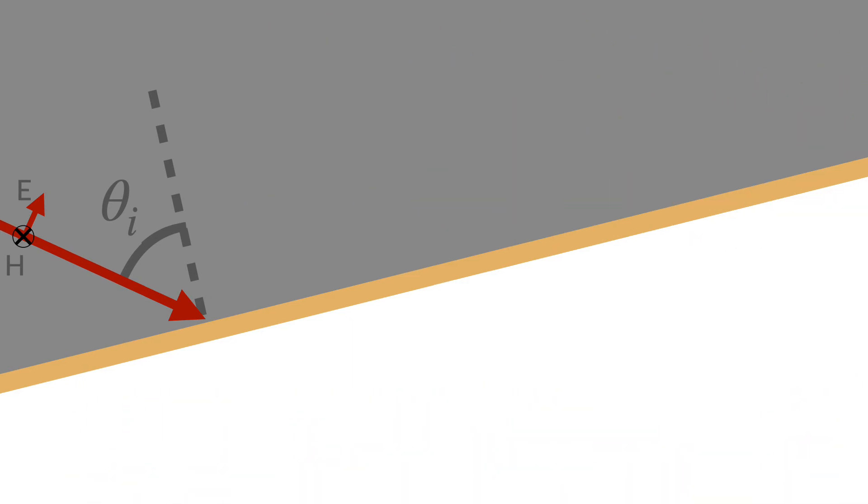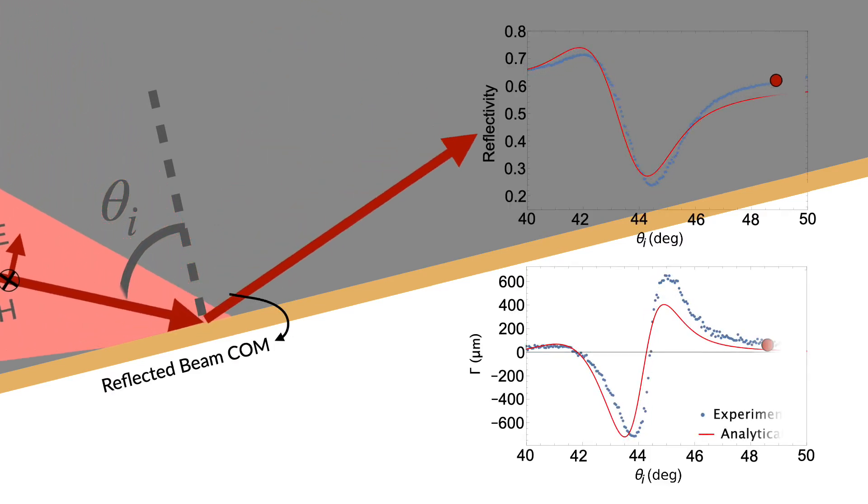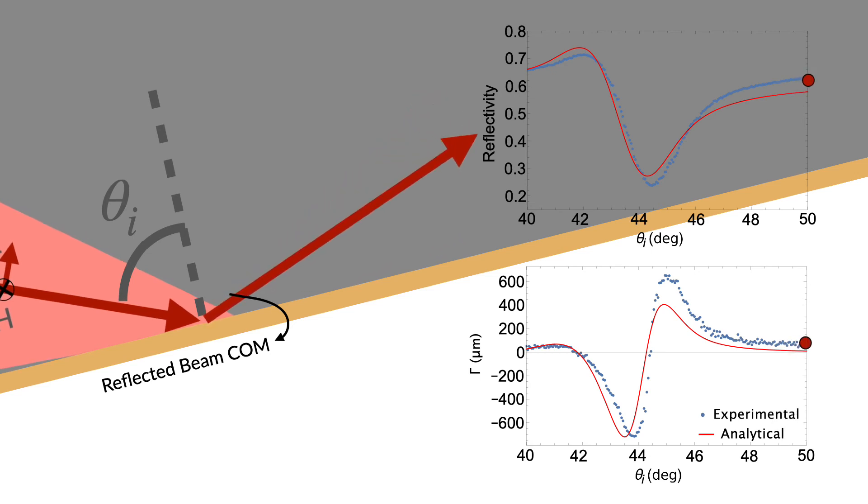In this work, by focusing the incident beam to a small beam waist and performing an angular scan while monitoring the reflected beam centroid, we measured a reflectivity dip at the SPR angle and a significantly large Goos-Hänchen shift within its vicinity.